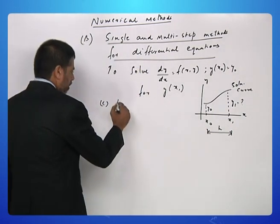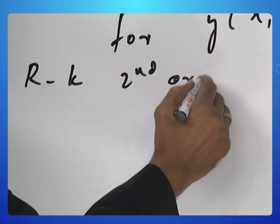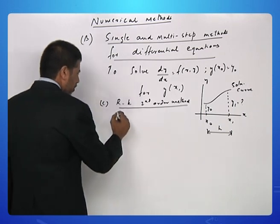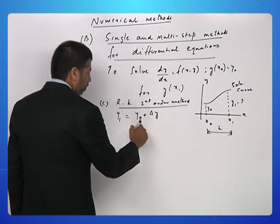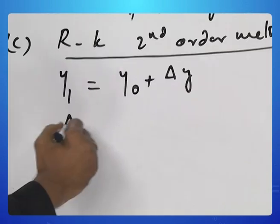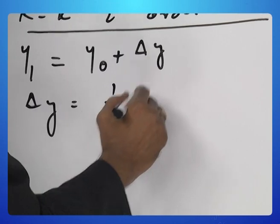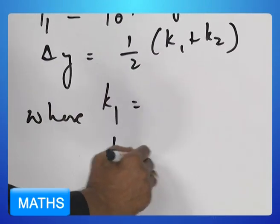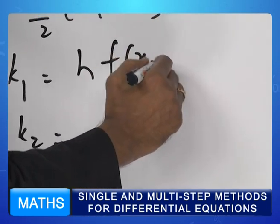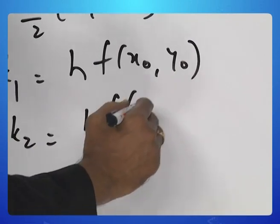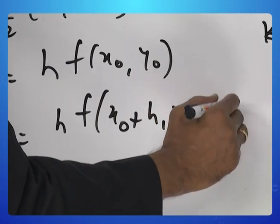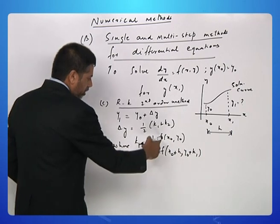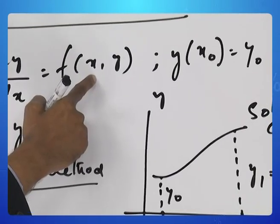We have what is known as the RK second order method. This is another single step method and according to this y1 is given by y naught plus delta y, where delta y is given by half k1 plus k2. k1 and k2 are given by h f of x naught y naught and k2 is h f of x naught plus h y naught plus k1. h is the difference between x1 and x naught.